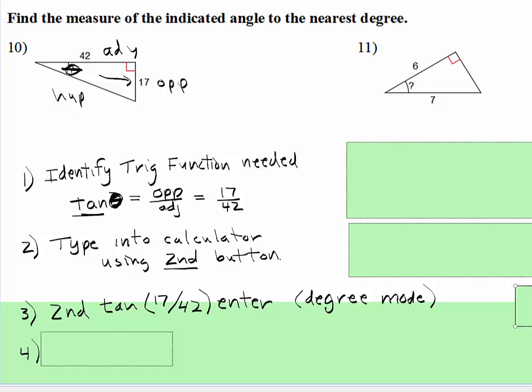Second, tangent, 17, fraction button 42 (or divide 42), right parentheses, enter. This says round to the nearest degree, so that degree is about 22, so that theta is about 22 degrees.